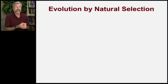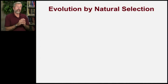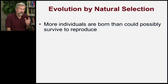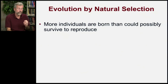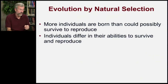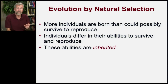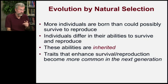We're coming back, finally, to those important ideas of Darwin. We're ready now to think about evolution by natural selection. It was fundamental to Darwin's ideas that more individuals are born than could possibly survive to reproduce. Individuals differ in their abilities to survive and reproduce, and these abilities are inherited. Traits that enhance survival and reproduction become more common in the next generation.